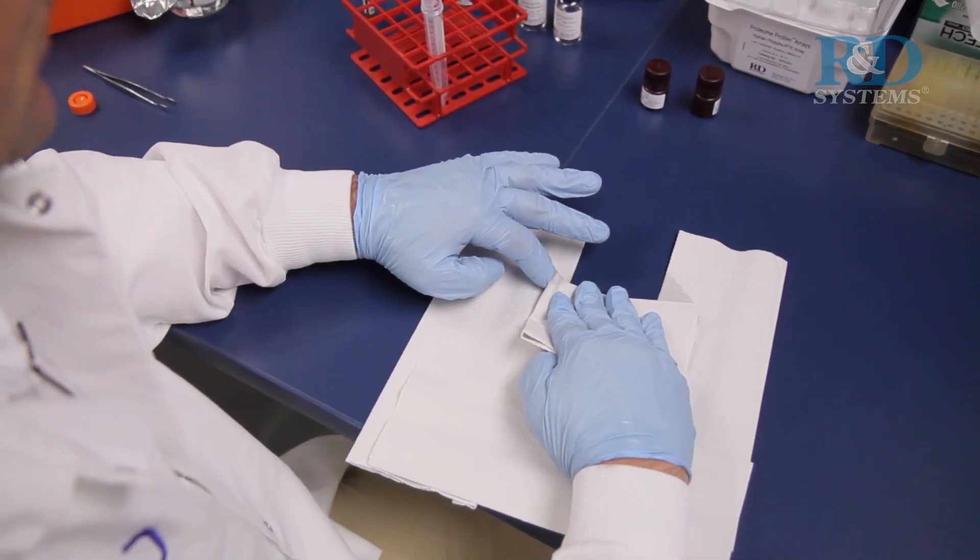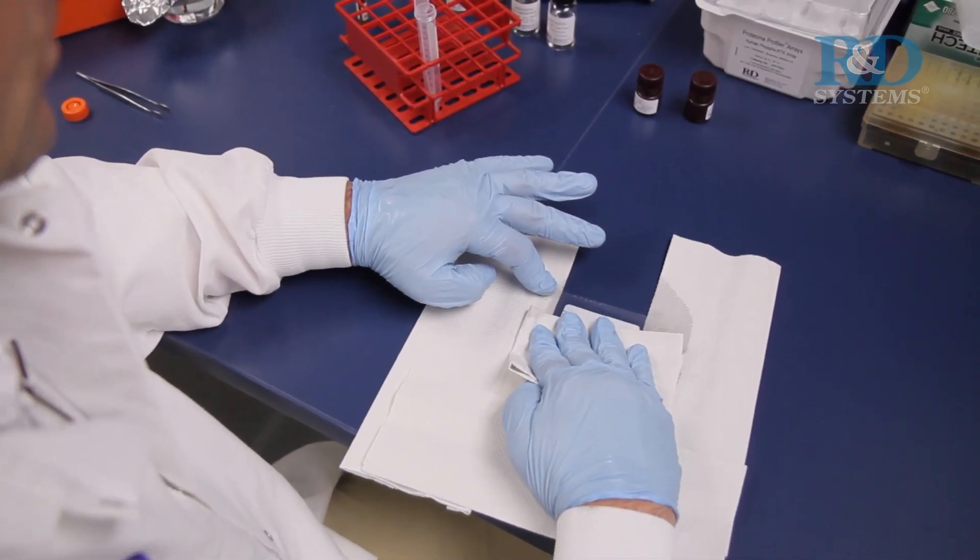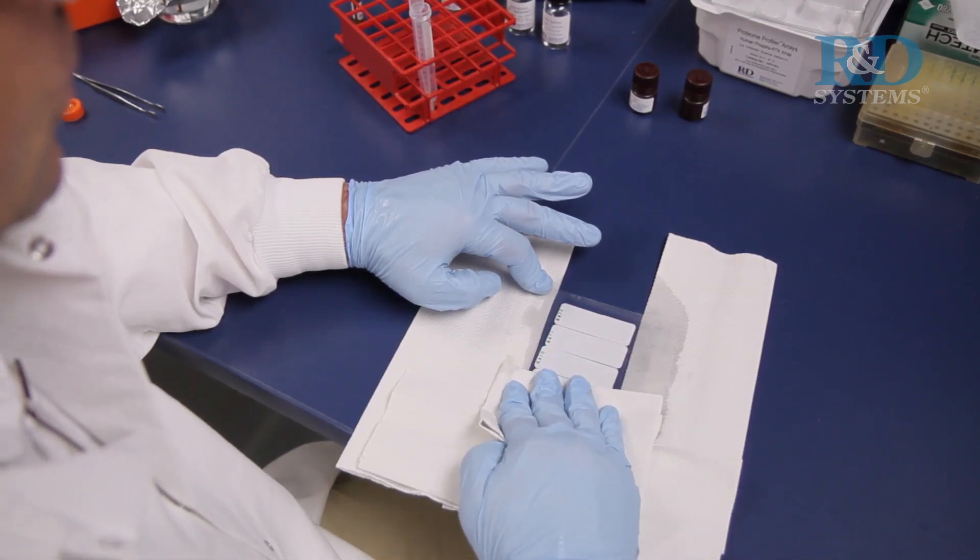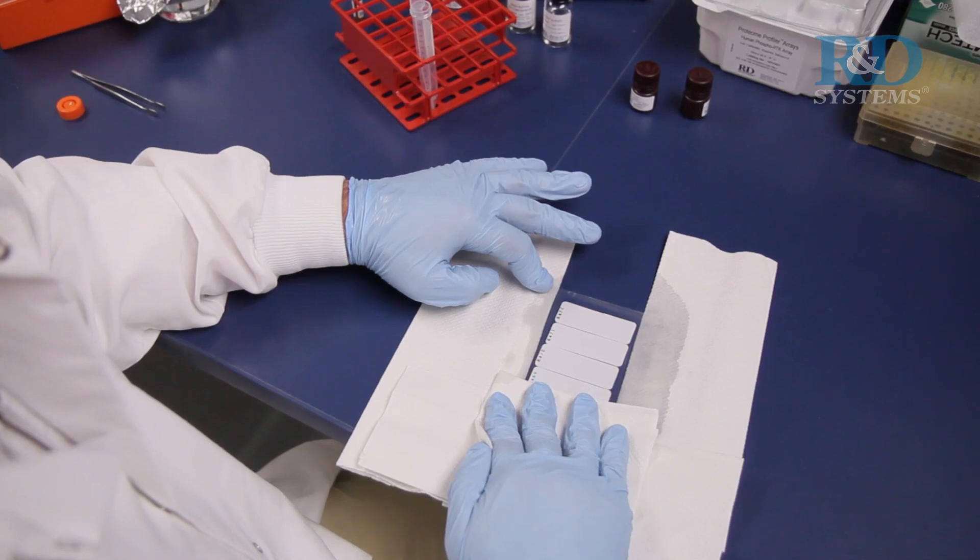Next, position paper towels on top and on the sides of the plastic sheet protector containing the membranes. And carefully squeeze out excess chemireagent mix.